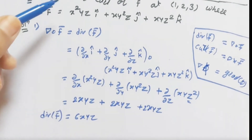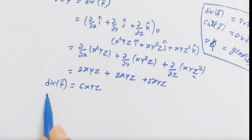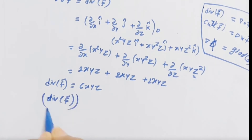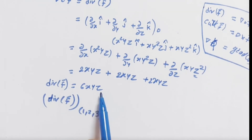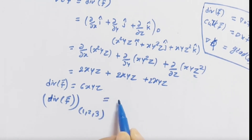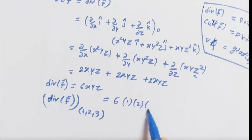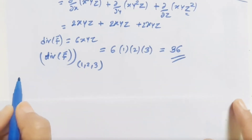We have to find this divergence at point (1, 2, 3). So divergence of vector f-bar at (1, 2, 3): put x=1, y=2, z=3 into 6xyz, giving 6 × 1 × 2 × 3 = 36.